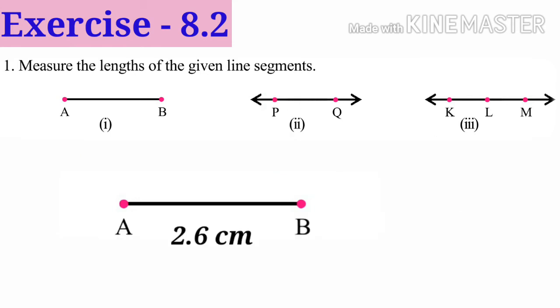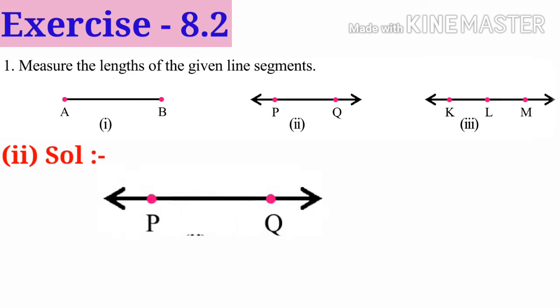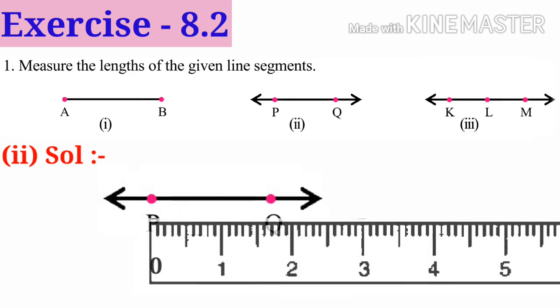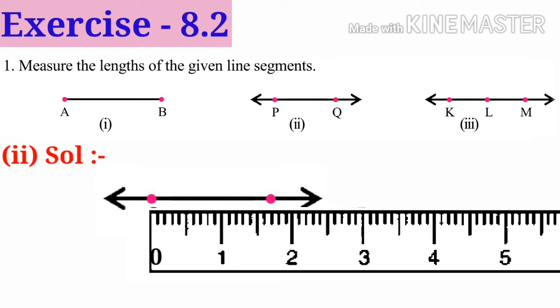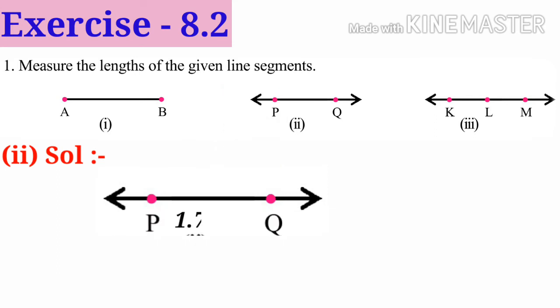Now number 2. Take the line segment PQ and take the scale and point 0 at point P and count the number of millimeters after 1. That is 1, 2, 3, 4, 5, 6, 7. So 1 after 7 millimeters, which can be written as 1.7 centimeters.